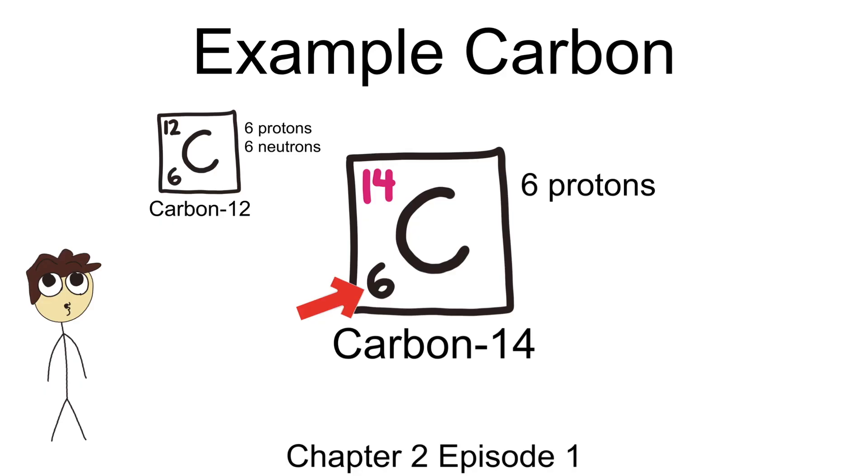No, what accounts for the additional two in atomic mass is the number of neutrons, which shouldn't be surprising. Those extra two are the extra two neutrons found within the nucleus. And thus, in carbon-14, we have six protons and eight neutrons. This version of carbon is an unstable, radioactive isotope of carbon.